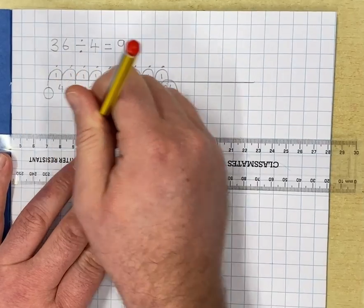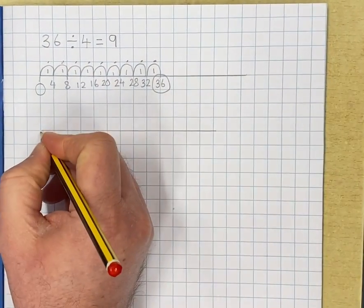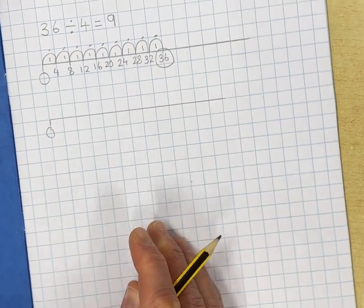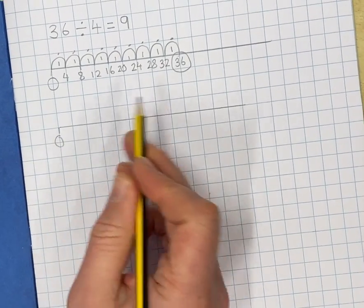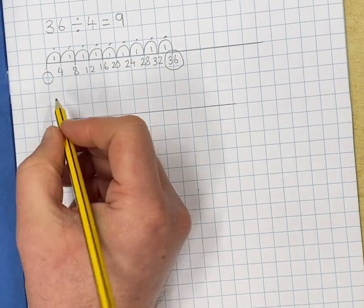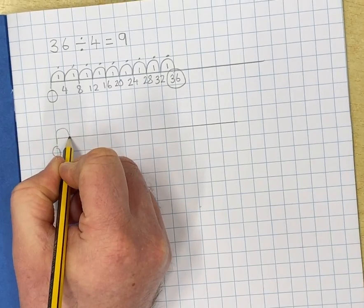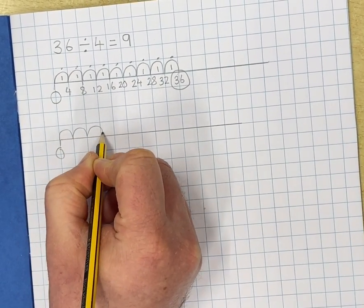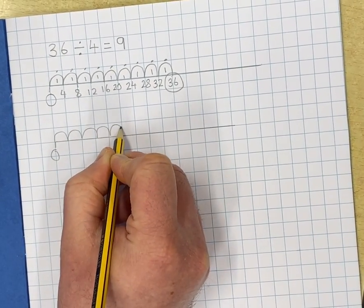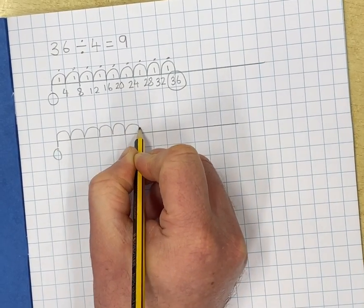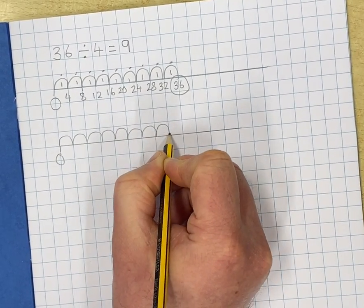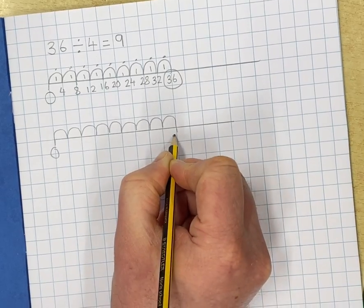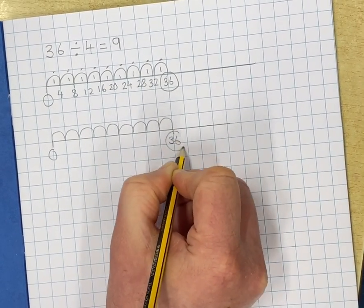Another number line. Zero. This time we're going to keep jumping in and counting in 4's as we go. 4, 8, 12, 16, 20, 24, 28, 32, 36. I'm stopping at 36 because that's my whole.